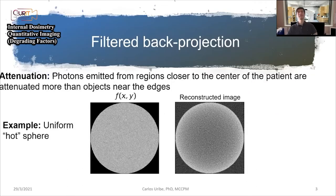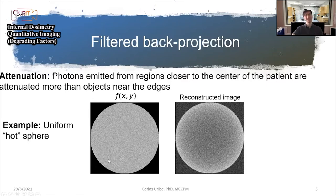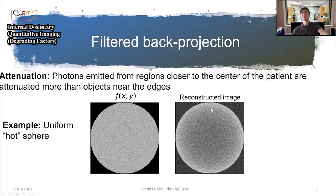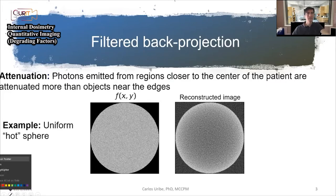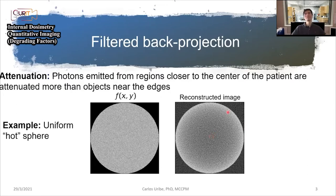When we were acquiring a uniform image of a uniform cylinder and we just do filter back projection, you reconstruct an image that looks like the one on the right. Something's wrong in this image — it was supposed to be uniform, but when we look at that image, it is darker in the middle and brighter on the edges. So something's wrong because we knew it was supposed to be uniform.